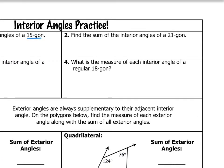Number two: find the sum of the interior angles of a 21-gon. This is a polygon with 21 sides, so we'll take 21 minus 2, which is 19, times 180. 19 times 180 is 3,420 degrees.